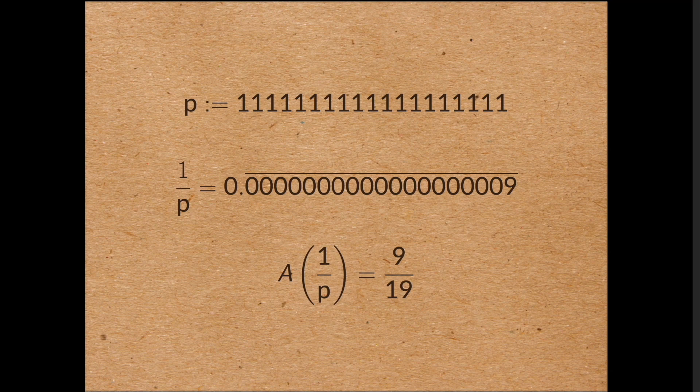Now if instead of taking 19 ones, you take 23 ones, you also get a prime. Or if you take 317 ones, you also get a prime. Or you take 1031 ones, you also get a prime. These are called prime rep units, and we conjecture that there are infinitely many of those. And if that conjecture is true, we see that really we expect a of 1 on p can be as small as you like.